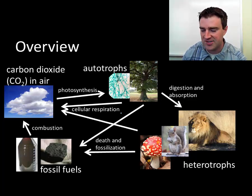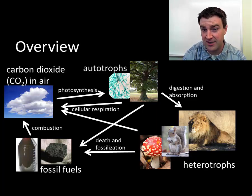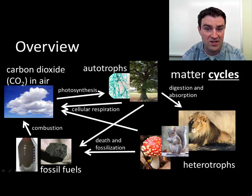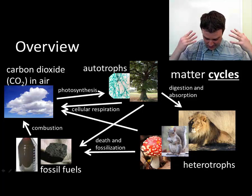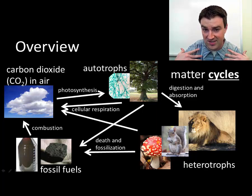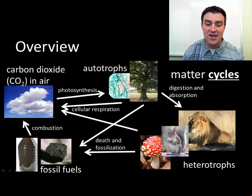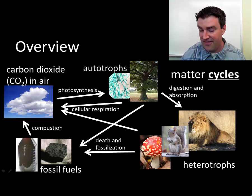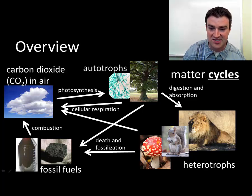Here is a way to sketch out the carbon cycle broadly. It looks rather complicated, but we're going to walk through it step by step. The first thing I want to point out is that matter does cycle. All of the carbon that has been here on this planet has always been here in some form or another. The carbon that currently makes me up will eventually be released back into the atmosphere, giving other organisms the opportunity to take in that carbon.